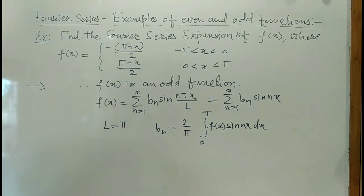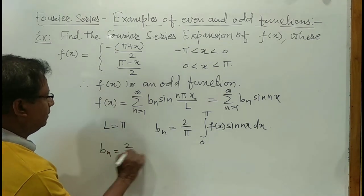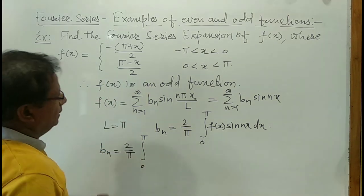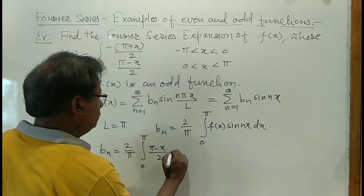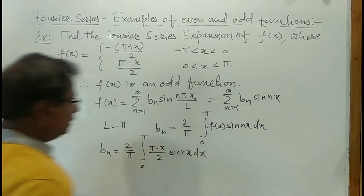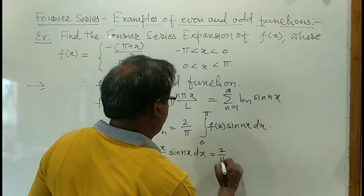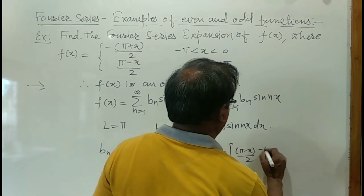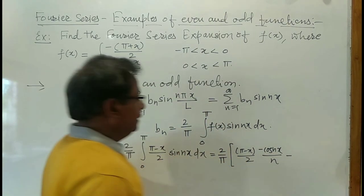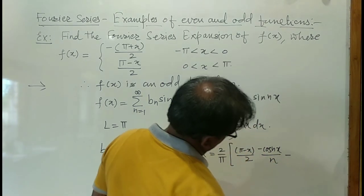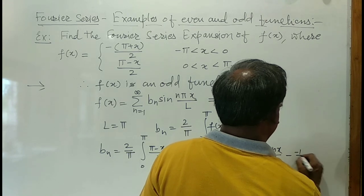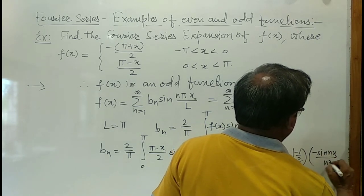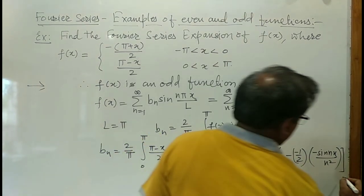Let us calculate b_n. So b_n equals 2 over pi times the integral from 0 to pi. Between 0 and pi, f(x) is defined as pi minus x over 2, so we integrate (pi minus x over 2) times sin(nx) dx. Integrating by parts: first function (pi minus x over 2) times the integral of sin(nx) which is minus cos(nx) over n, minus the derivative of the first bracket which is minus 1 over 2 times the integral of cos(nx) which is sin(nx) over n squared, with limits 0 to pi.